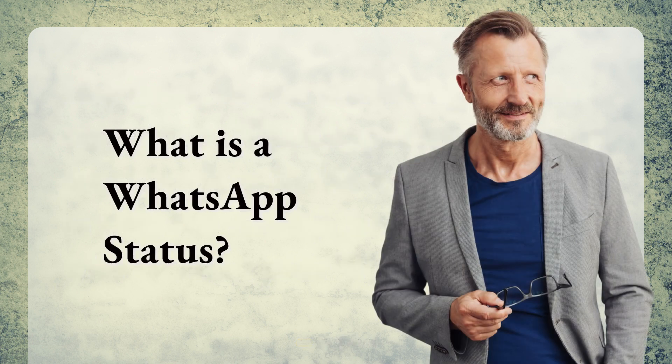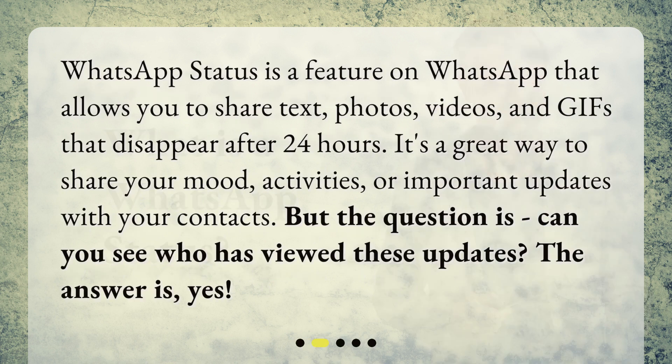What is a WhatsApp status? WhatsApp status is a feature on WhatsApp that allows you to share text, photos, videos, and GIFs that disappear after 24 hours. It's a great way to share your mood, activities, or important updates with your contacts. But the question is, can you see who has viewed these updates? The answer is yes.